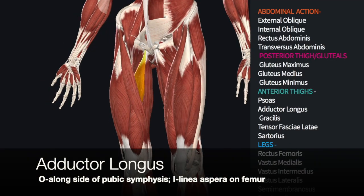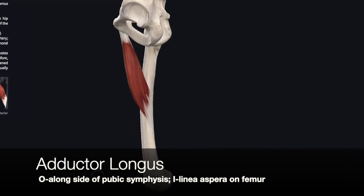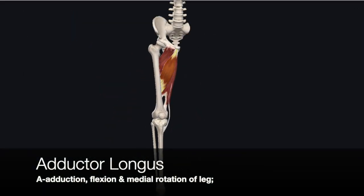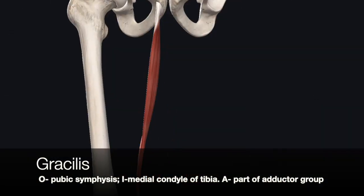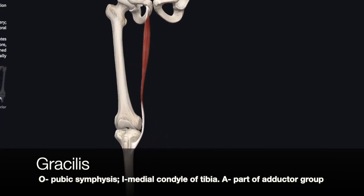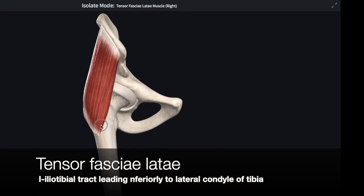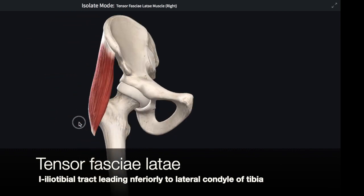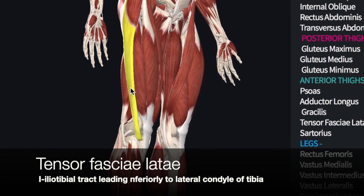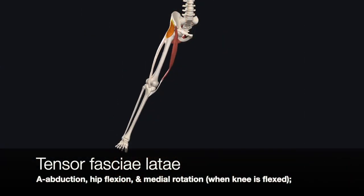The adductor longus muscle is another fairly deep muscle. Its origin is on the pubis near the pubic symphysis, and its insertion is on the linea aspera of the femur. It causes flexion of the leg at the pelvis and adduction of the leg. The gracilis is another adductor muscle running the entire length of the medial thigh, from its origin at the pubic bone to the medial condyle of the tibia. The tensor fasciae latae is a lateral hip muscle that originates at the iliac crest and inserts into the proximal end of the iliotibial tract, a tendon running the entire length of the thigh.